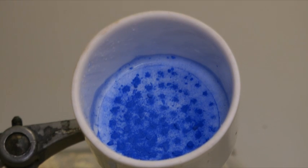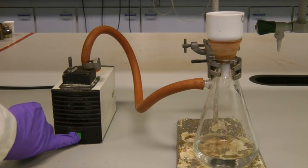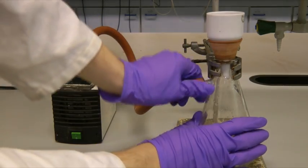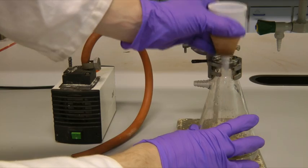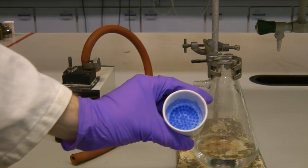Once your product is dry, you can turn the vacuum pump off. You then remove the rubber hose to release the vacuum and the funnel can be removed from the conical flask.